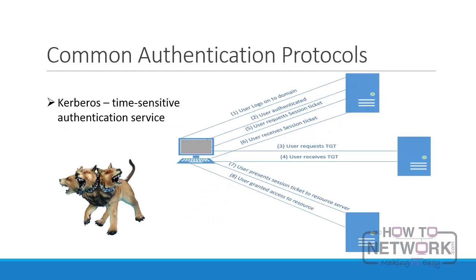Kerberos is an authentication service that is based on a time-sensitive ticketing system. It can be used to manage access control for multiple servers using a centralized authentication server. In the Kerberos process: first, the user logs on to the domain. Next, the user requests a Ticket Granting Ticket, or TGT, from the Kerberos server. Then, the Kerberos server responds with a time-stamped TGT. Next, the user presents the TGT back to the authenticating server and requests a session ticket to access a specific resource. The server then responds with a session ticket. The user presents the session ticket to the resource. Finally, the resource authenticates the user via the ticket and allows access.